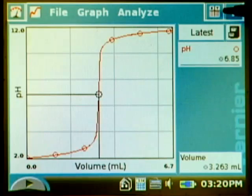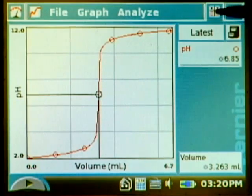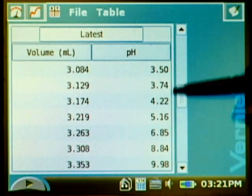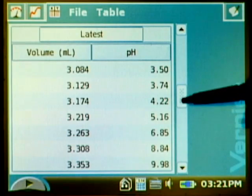If we go to the table tab we could scroll through and look at the changes in pH and find the largest jump. That would be one way but there's a few other ways that are even better.